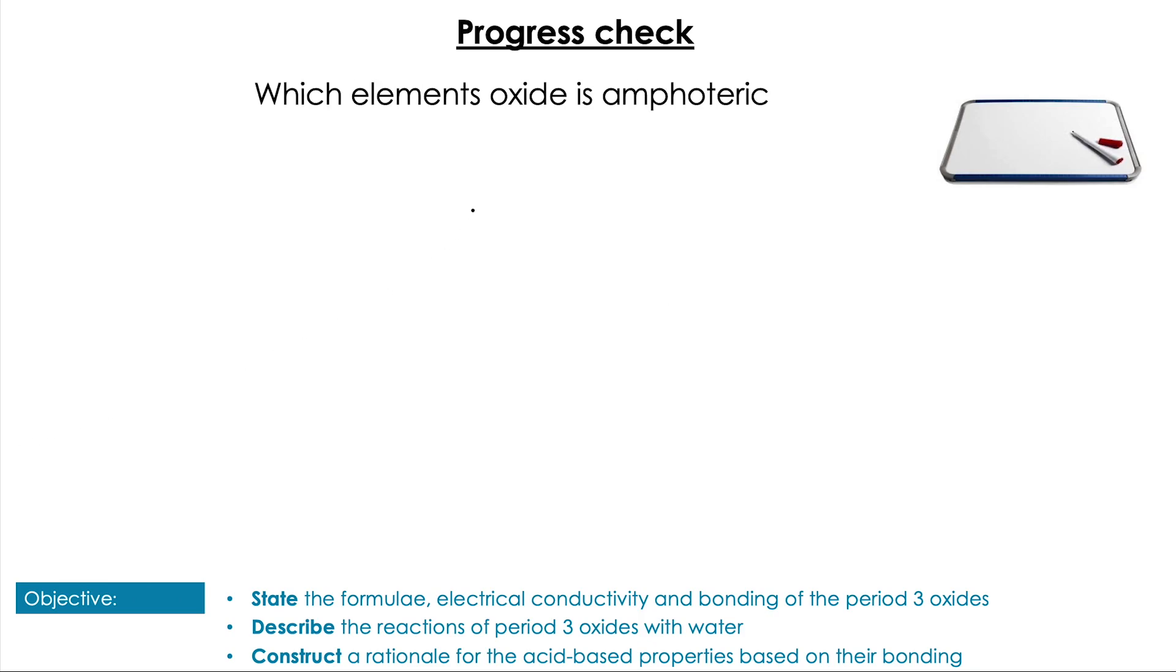Next question: which element's oxide is amphoteric? Pause the video. It is, of course, aluminium oxide, Al2O3.